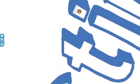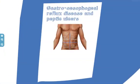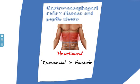Upper abdominal or epigastric pain related to eating or alcohol, or what the patient may call heartburn, could be a sign of gastroesophageal reflux disease or a peptic ulcer. The patient may also complain of nausea and vomiting. Duodenal ulcers are four times as common as gastric ulcers. Most peptic ulcers are caused by Helicobacter pylori and can be eradicated with antibiotics.